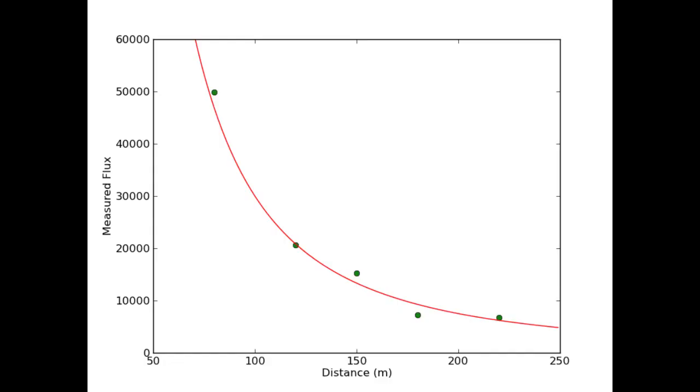So, here's that 1 over r squared curve plotted over the data that we collected on Anzac parade. And you can see that while the curve does not perfectly fit the data, it seems reasonably to explain what's going on.